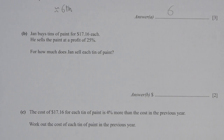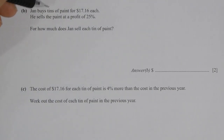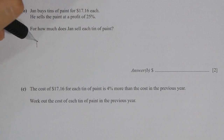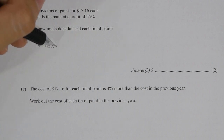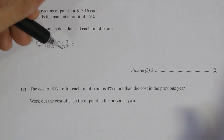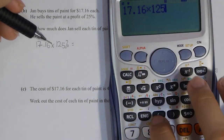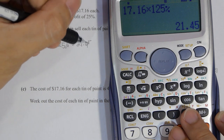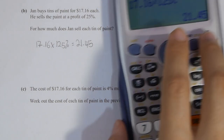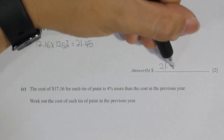Then buy at 17.16 cents each and sell it for a profit of 25 percent. So to find the selling price, simply take 17.16 times 125 percent, so the result will actually be 21.45.